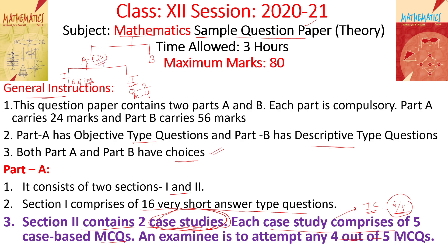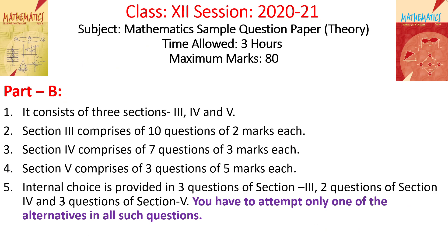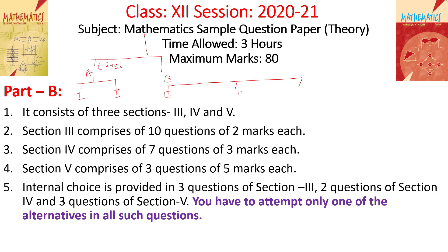Section 2 carries 24 marks in total. Now moving to Part B — Part A had 24 marks as discussed. Part B is subdivided into three sections: Section 3, Section 4, and Section 5.